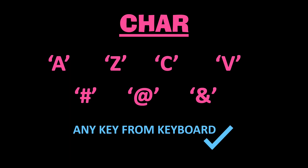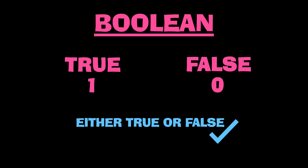Just like string, you should give your character inside a pair of quotation marks. You can see examples for char data type on screen. Lastly, boolean data type contains either zero or one, where zero stands for false and one for true.